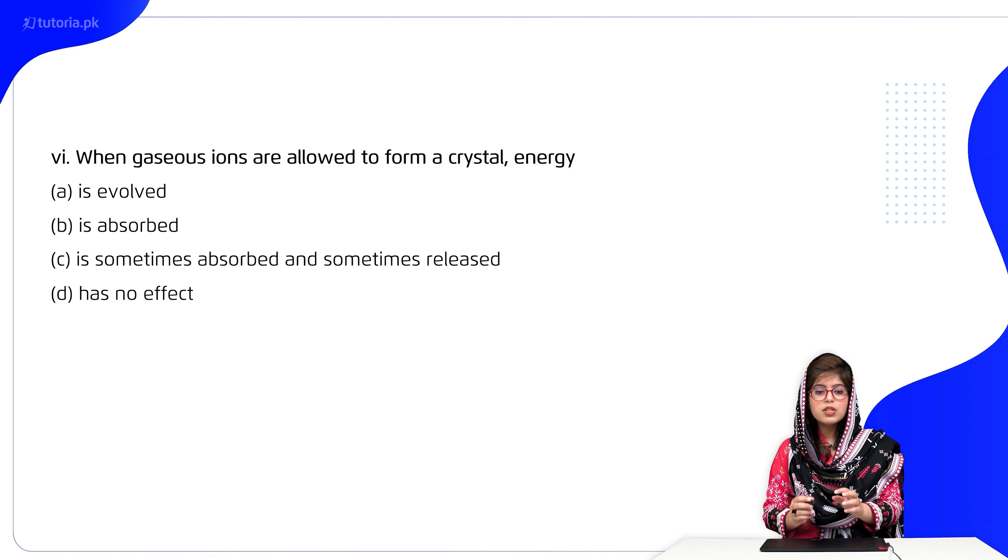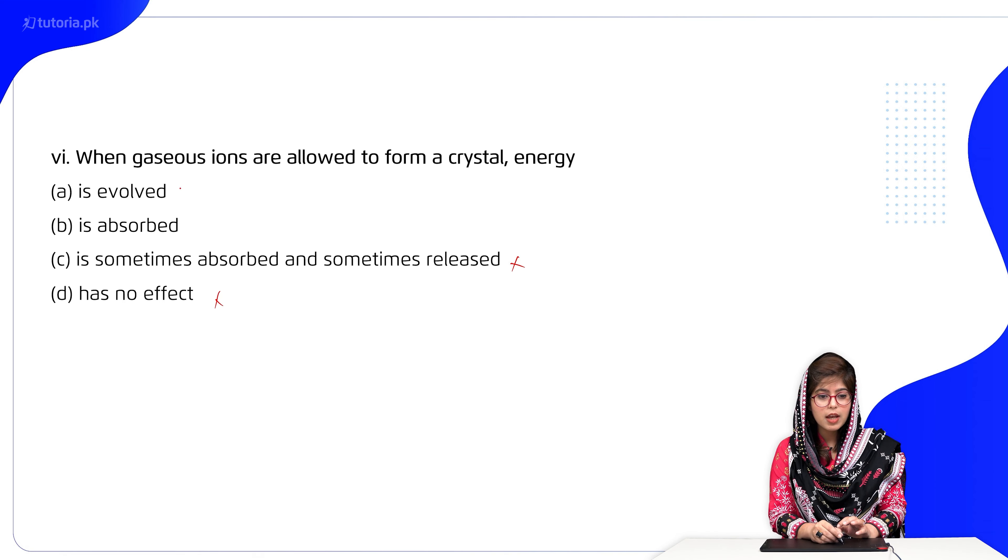Then 6: When gaseous ions are allowed to form a crystal, energy is: A) evolved, B) absorbed, C) sometimes absorbed and sometimes released, D) has no effect. C and D we have cancelled. So it's option A.